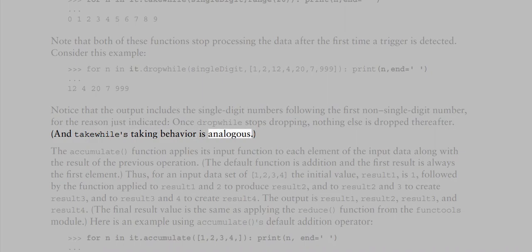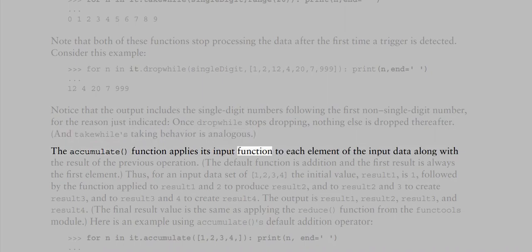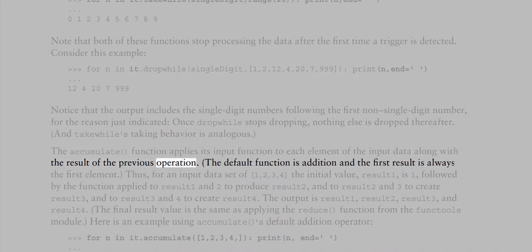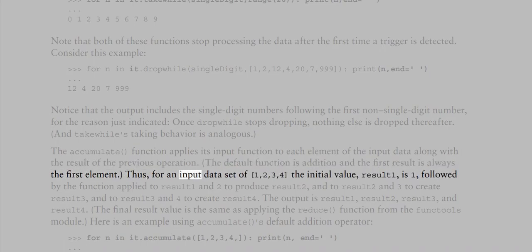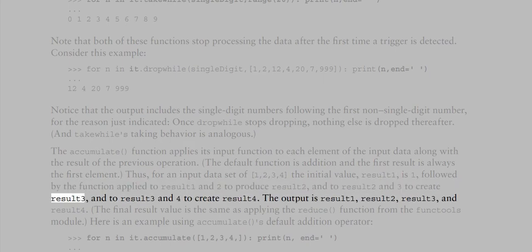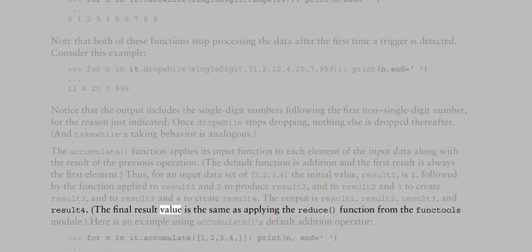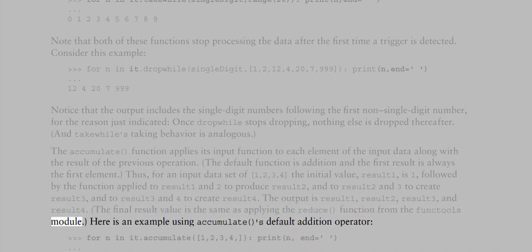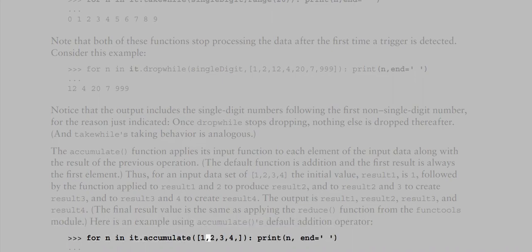The accumulate function applies its input function to each element of the input data along with the result of the previous operation. The default function is addition, and the first result is always the first element. For an input of 1, 2, 3, 4, the results are 1, 3, 6, 10. The final result value is the same as applying the reduce function from the functools module. Here is an example: for n in it.accumulate([1, 2, 3, 4]): print(n, end=' ') outputs 1 3 6 10.